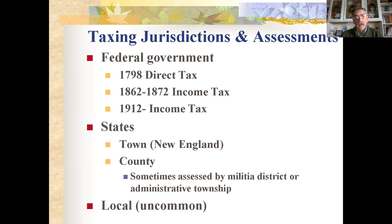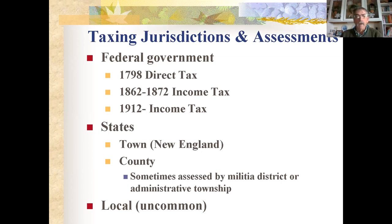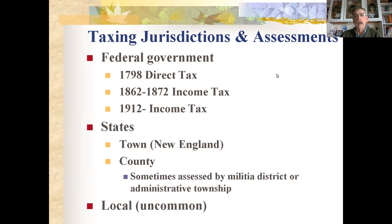States could also assess taxes. In New England the functional unit is the town rather than the county, so you had town taxes. In our part of the world — Missouri — it was county-level, and sometimes by militia district or administrative township. In North Carolina you don't find county lists — you find Captain Burger's district within a county — resulting in a patchwork of surviving lists. Local entities also taxed early on, though that's relatively rare.